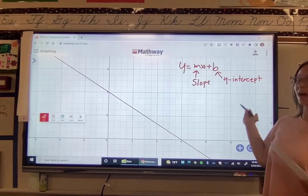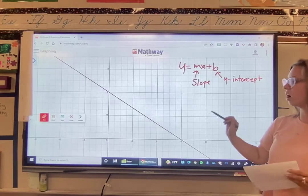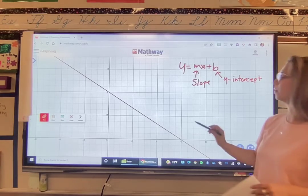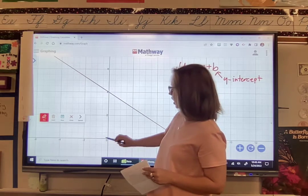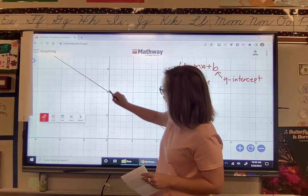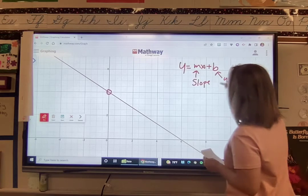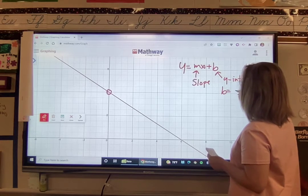So the y-intercept, that's easy. I'm going to find where on the graph x equals 0. So here's where x will equal 0, right here, and then I'm going to go up to 4. So we know that b is going to equal 4.